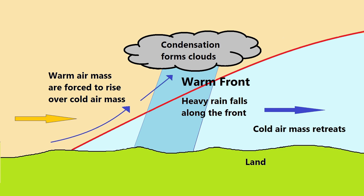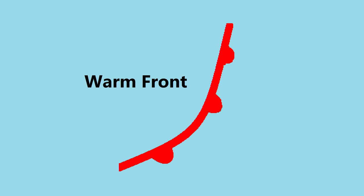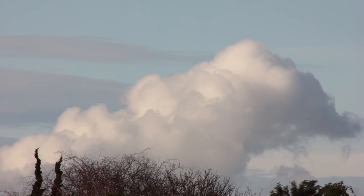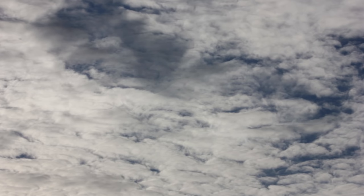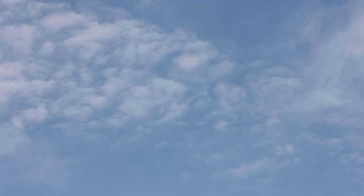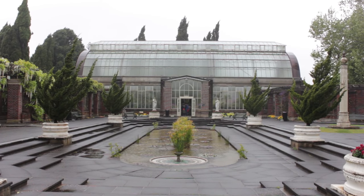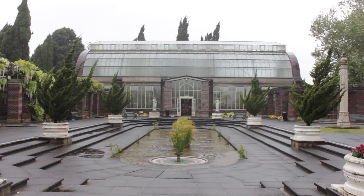A warm front is the boundary where a moving warm air mass is replacing a cold air mass, represented as a red line with semicircles pointing towards the direction of movement. Warm fronts move more slowly than cold fronts because it is harder for warm air to push against the denser cold air. As the warm air rises above the cold air, water vapour condenses forming high clouds, and light precipitation can fall as the warm front passes.